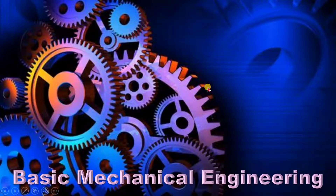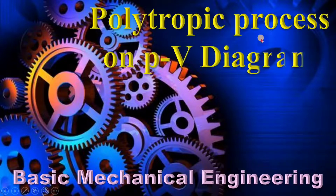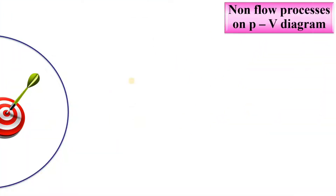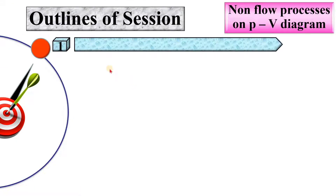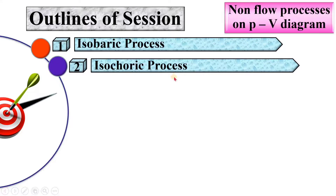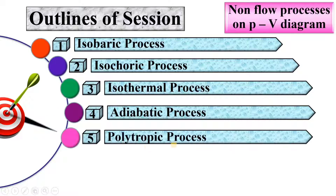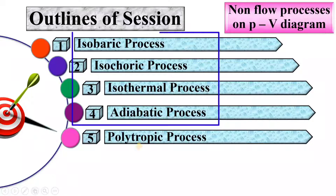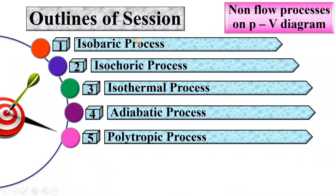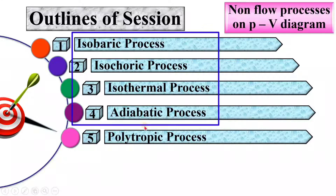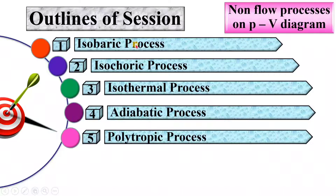Welcome to my basic mechanical engineering playlist. Today I am going to discuss about the polytropic process on the PV diagram. Let us first see the outline of the session: isobaric process, isochoric process, isothermal process, adiabatic process, and at last the polytropic process on the PV diagram. These all are non-flow processes and are considered as special cases of the polytropic process.